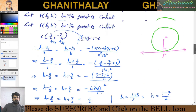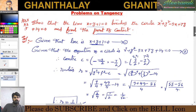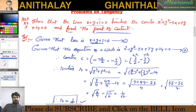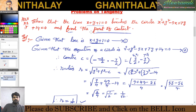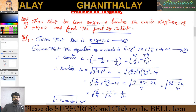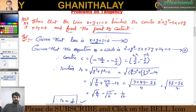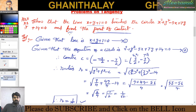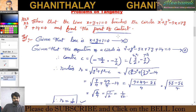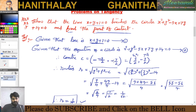So for this problem, to find the point of contact, you need to know the condition that a line touches the circle — that is, show r equals d — and to find the point of contact, use the foot of the perpendicular from the center of the circle to the given line.